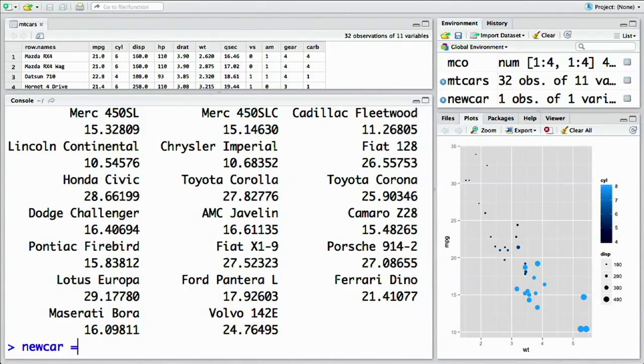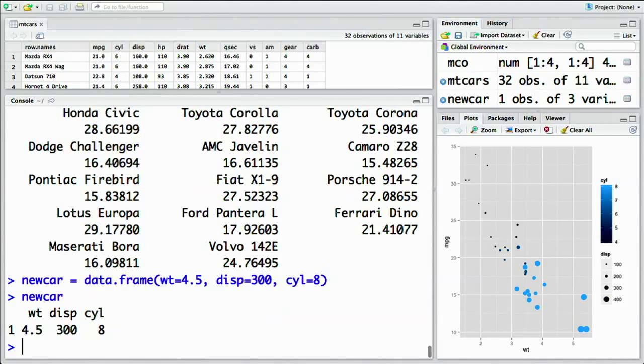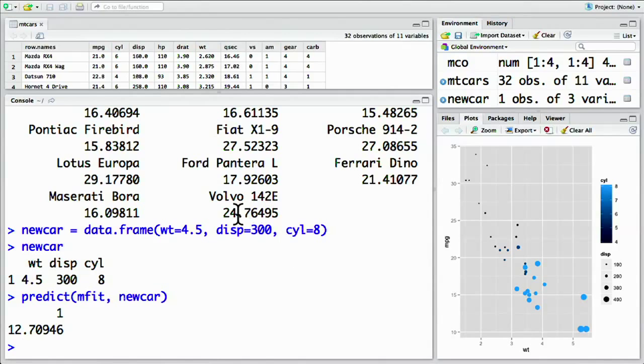weight equals 4.5, displacement volume of 300 cubic inches, and the number of cylinders equals 8. Now we have this data frame. We can predict it with predict mfit comma newcar to produce a prediction based on this hypothetical new car.